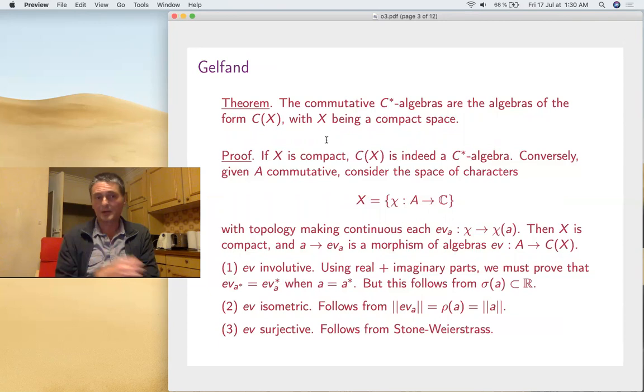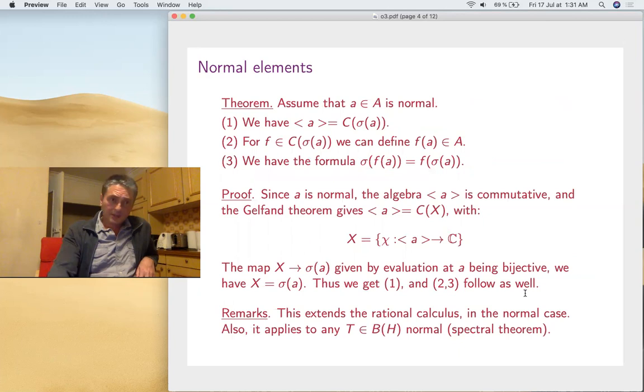Conversely, given A commutative, you take the space of characters. That's how you recover the space which is behind. You have a morphism from A to C(X) in the space of characters. The problem is to prove that this is a *-isomorphism. Isometric and surjective is no problem. Isometric you get from the spectral radius, surjective by Stone-Weierstrass. The only point is to prove it's involutive. Using real and imaginary parts, it's enough to prove it for self-adjoints, and it follows from what we did last time. The spectrum of self-adjoint is in the reals.